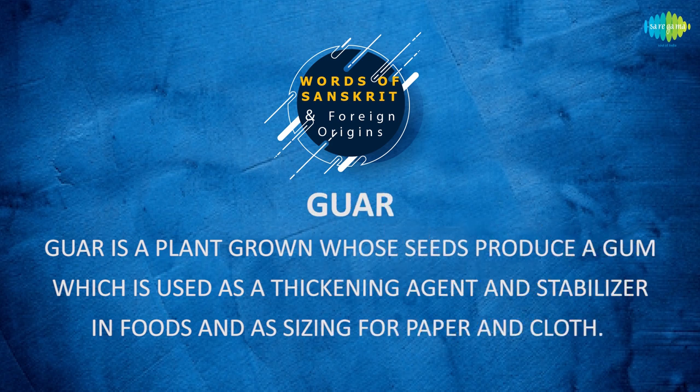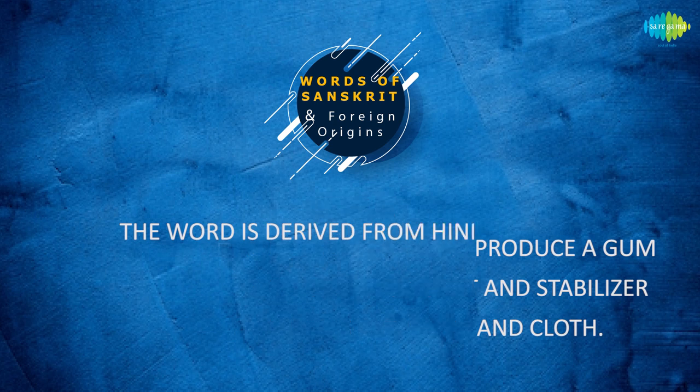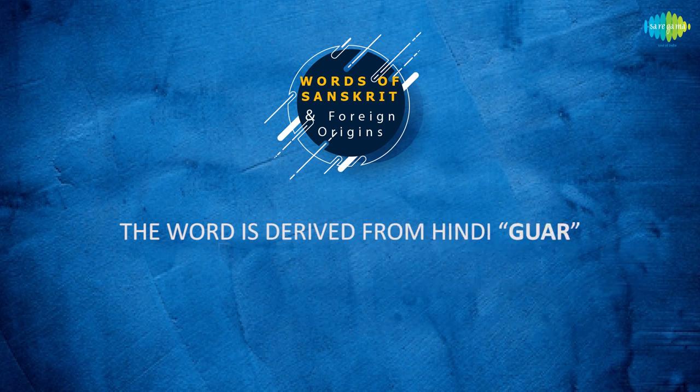Guar is a plant whose seeds produce a gum which is used as a thickening agent and stabilizer in foods and as sizing for paper and cloth. The word is derived from Hindi guar.